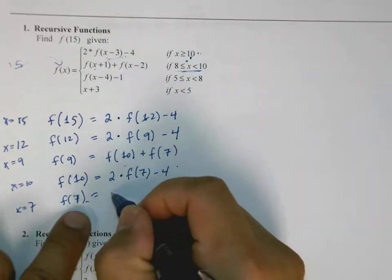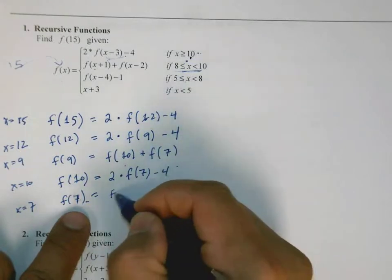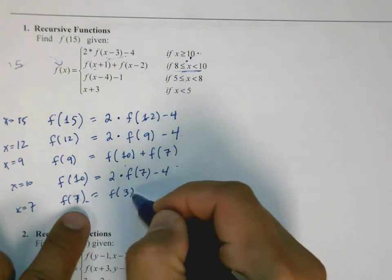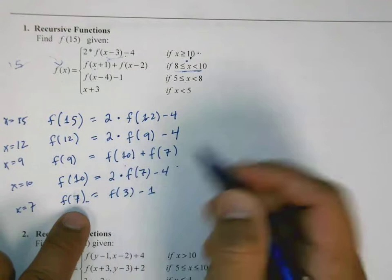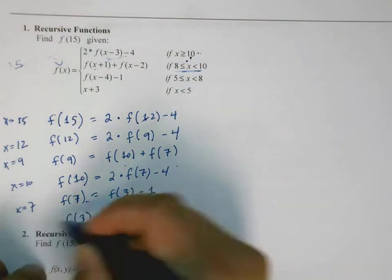I'm not going to create a separate line because whatever f of 7 produces, the other f of 7 will also produce. So let's get down to here. f of 7 is this line of code. So that's f of x minus 4, or 3, minus 1. I don't know what f of 3 is, so I have to calculate that when x is equal to 3.